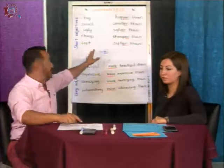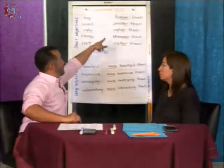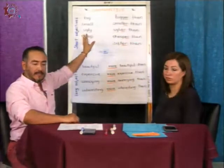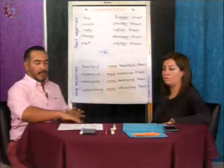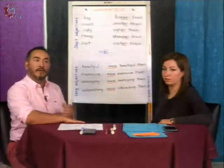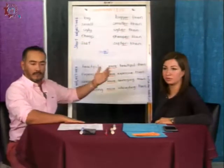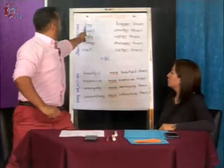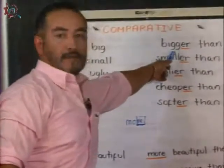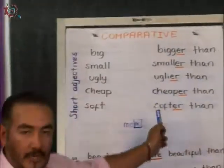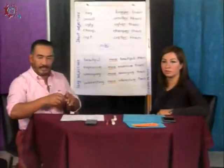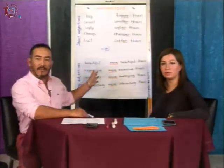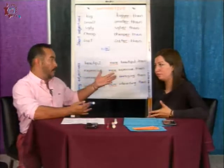Cuando terminan en -Y, como ugly, cambia la letra: se sustituye la Y por una I latina y se agrega -ER. También hay regla sobre consonante-vocal-consonante: si recuerdan, consonante-vocal-consonante equivale a doblar la segunda consonante. Un ejemplo es big: consonante-vocal-consonante → se dobla la última consonante y solo se agrega -ER. Esas reglas son importantes de recordarlas.